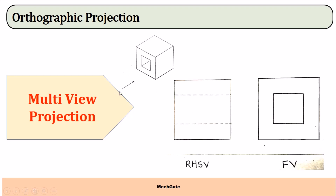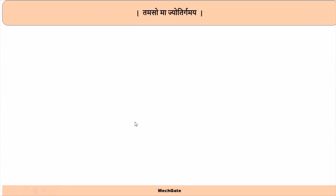In orthographic projection with an isometric view, when the observer looks from a particular direction he can see two square faces — this is the front view. For the side view, the observer looks from another direction and can see the square faces, while the rectangular cavity will be hidden and represented using hidden lines. So here we use two views: a front view and a right-hand side view.